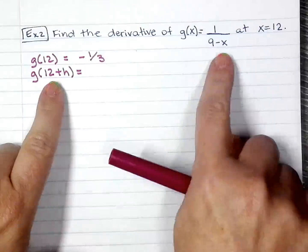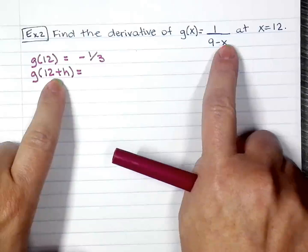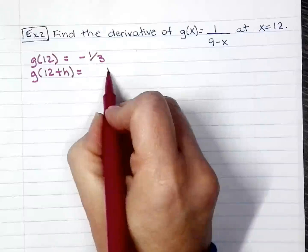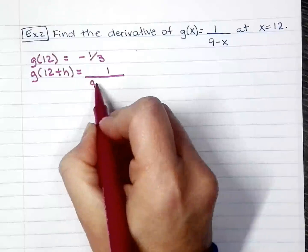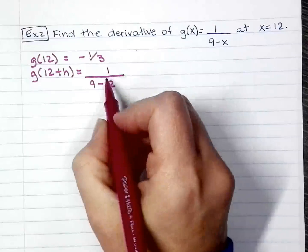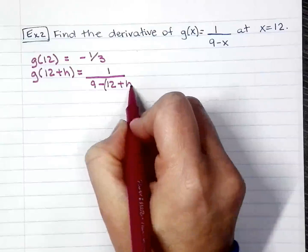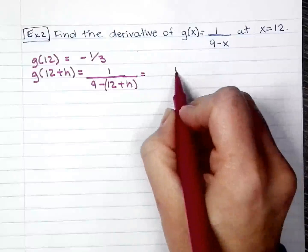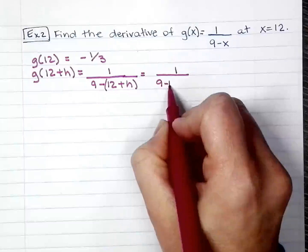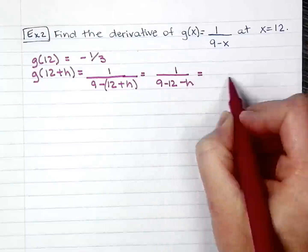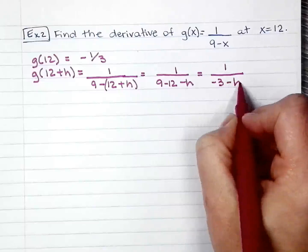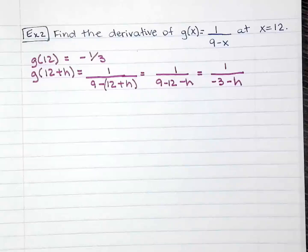Now the second part, I will substitute 12+h where x is. Be careful with that negative. Distribute that negative. Combine like terms. Now we're ready to start.